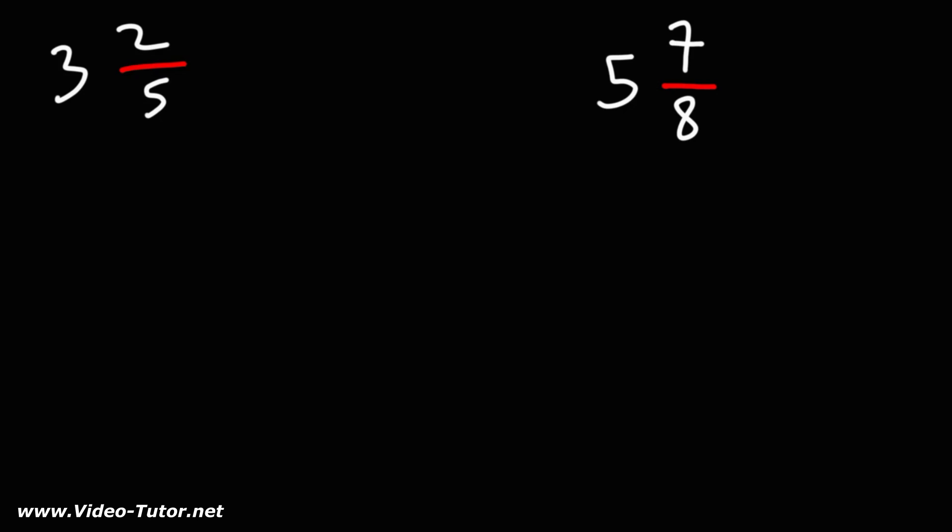In today's lesson, we're going to talk about how to convert a mixed number into a percentage. First, we need to convert the mixed number to a decimal, and then we can convert the decimal to a percentage by multiplying it by 100.